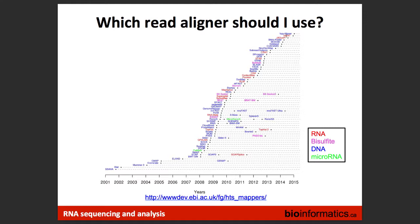It wasn't until recently that the same team that worked on TopHat released HiSat, which cut down on both memory and processing time. They managed to process 100 million reads in 23 minutes using only 4 GB of memory. That's the tool we picked for today's module. Instructions are also available for STAR, though we may not have time to run both.